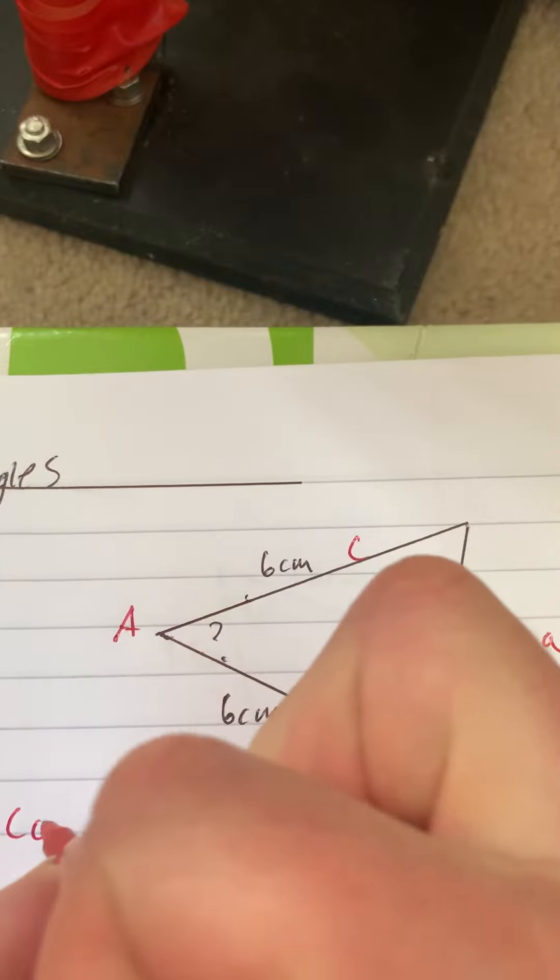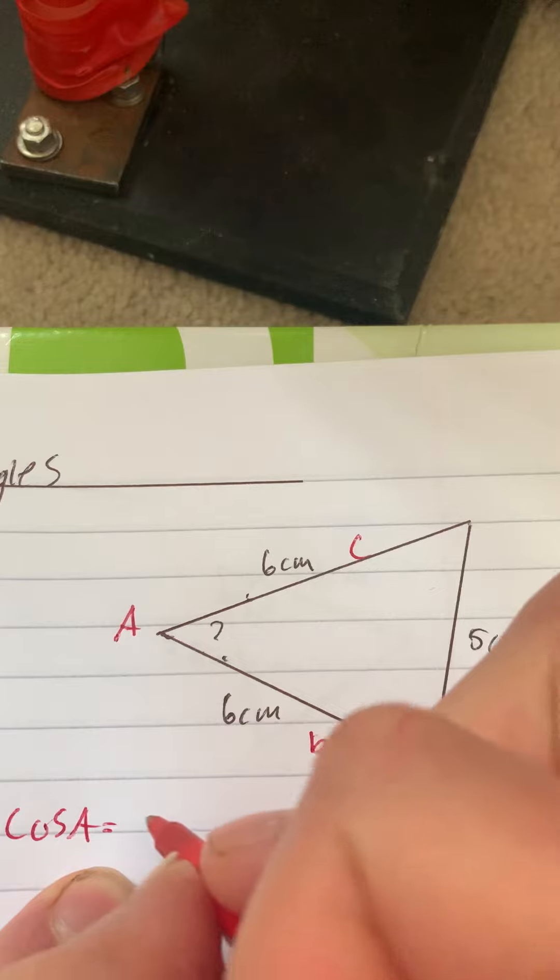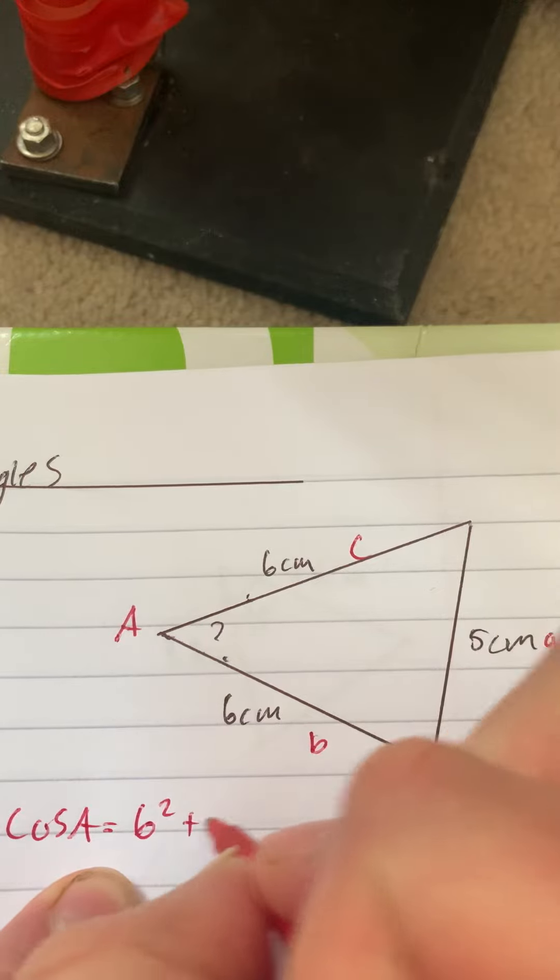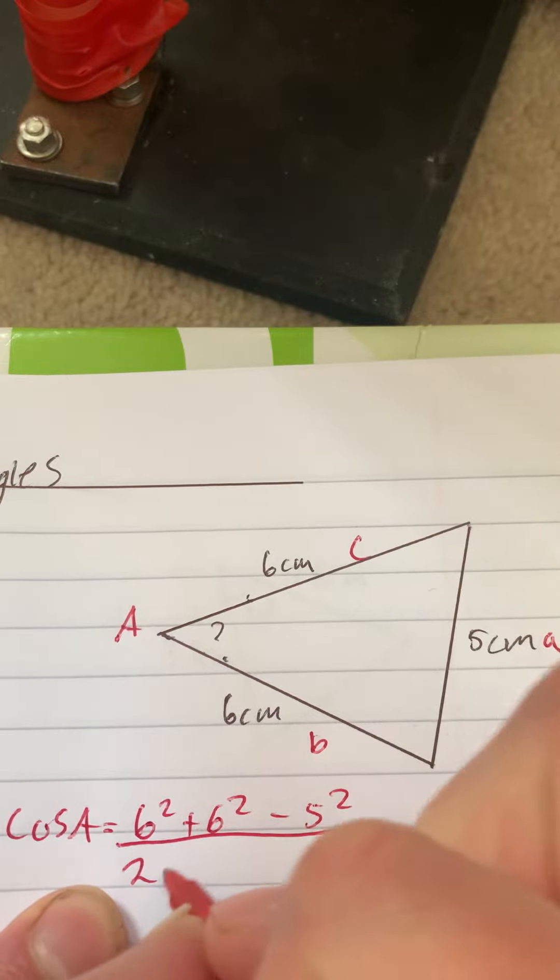So we've got cos A is equal to 6 squared, add 6 squared, minus 5 squared, all over 2 times 6 times 6.